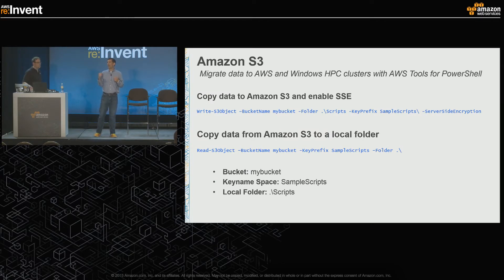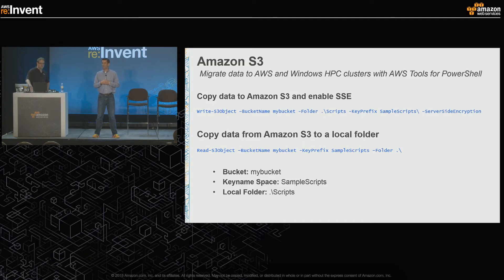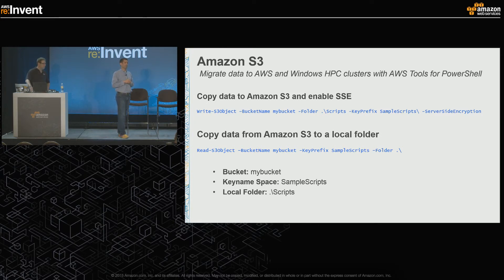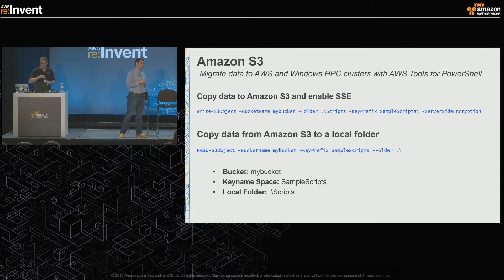For migrating data to S3, we have a toolset called AWS Tools for PowerShell with built-in multi-part upload - a multi-threaded capability for moving large data objects to S3 very efficiently. It breaks larger objects into smaller pieces and reassembles them transparently when they reach S3. When you leverage AWS Tools for PowerShell, this is done automatically. You can see here examples of reading and writing data to S3 using AWS Tools for PowerShell.